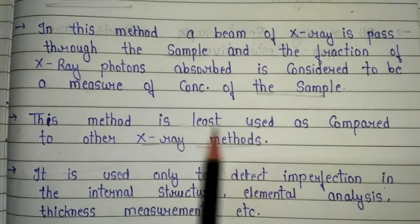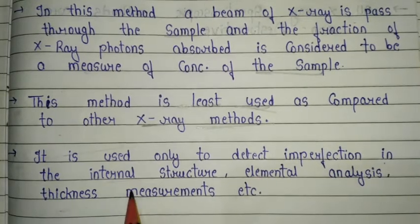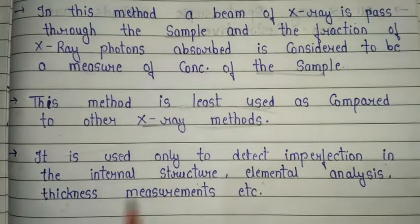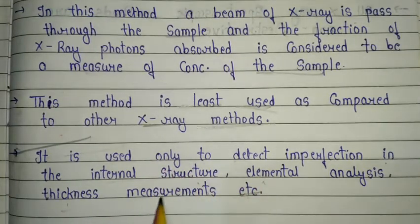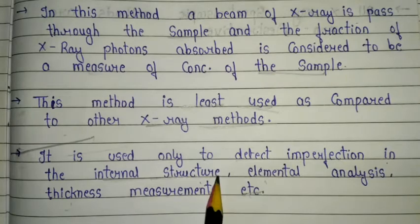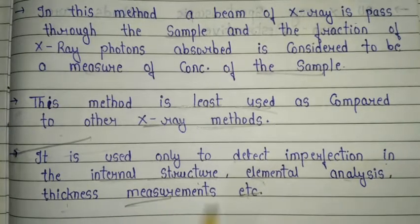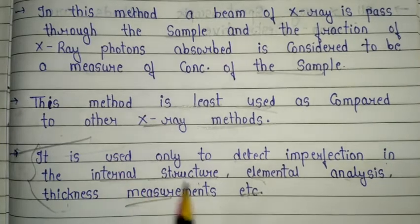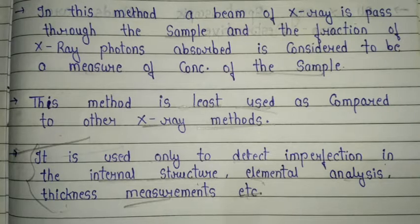X-ray absorption is the least used method as compared to other X-ray methods like X-ray diffraction and X-ray fluorescence. It is used only to detect imperfections in the internal structure of a sample, for elemental analysis of any given compound, and for thickness measurement. These are the important applications and basic introduction about X-ray absorption — also a very important topic from the semester exam point of view.